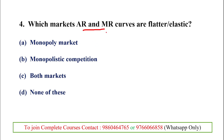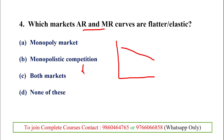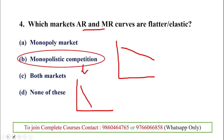The next question asks in which market the AR and MR curves are flatter or more elastic. For a monopoly firm, the AR and MR curves are steeper. In monopolistic competition with differentiated products, the AR and MR curves are flatter or more elastic. So the flatter or elastic AR and MR curve is seen in monopolistic competition.